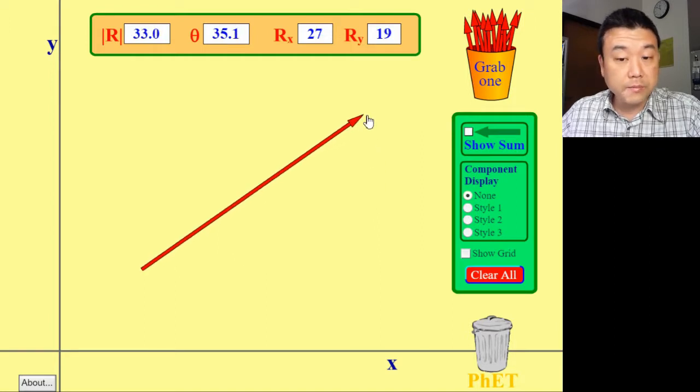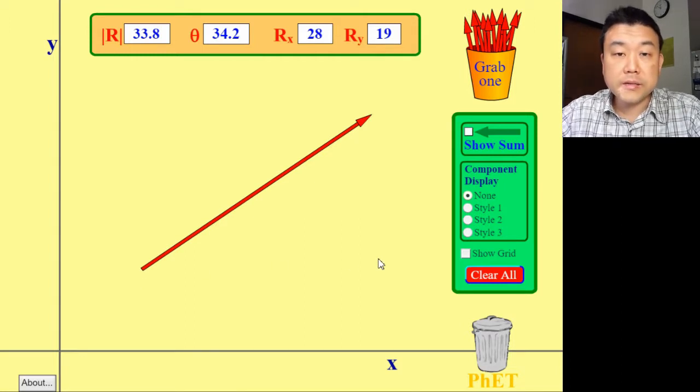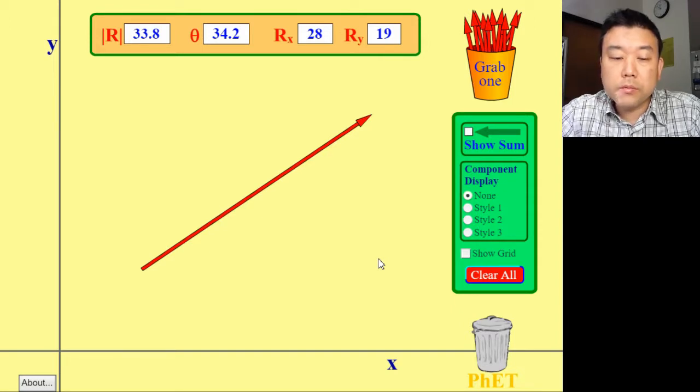Note how to describe this vector in two dimensions, I need two numbers. These two numbers can be its length, 33.8, and its direction, 34.2 degrees from the horizontal. This is very intuitive in our description of vectors as geometric quantities, but we will soon find that this way of describing vectors can be very limiting. We are going to want to describe vectors by its components.